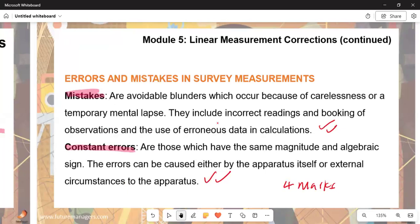We have constant errors. These are errors which have the same magnitude and algebraic sign. The errors can be caused either by the apparatus itself or the external circumstances to the apparatus. That can be for a maximum of four marks.